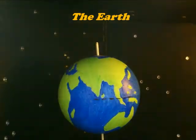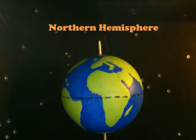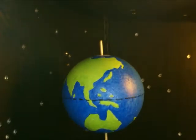The Earth. The equator divides the Earth into a Northern Hemisphere and a Southern Hemisphere. Australia is in the Southern Hemisphere.